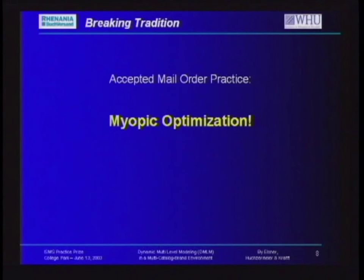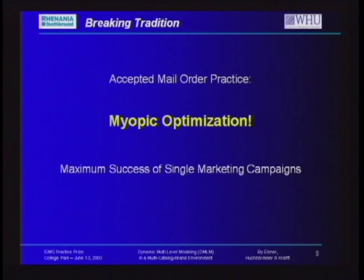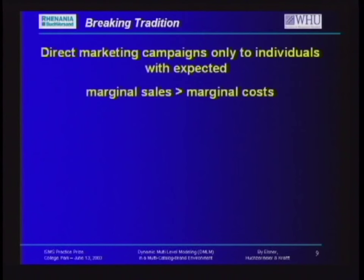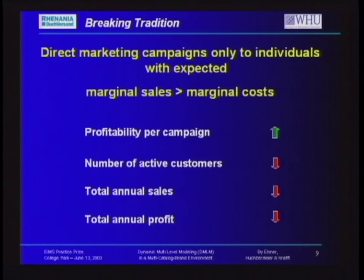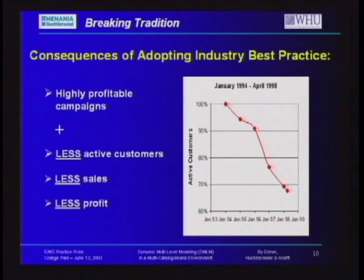You might ask what's wrong with that. We think a lot is wrong. In direct marketing, this led to a myopic optimization that tries to reach the maximum success out of single marketing campaigns. There are different ways to measure success, but one factor they all have in common is that marginal sales must exceed or equal marginal costs. This is taught everywhere worldwide, and if you do that, you have high mailing profitability. But you lose active customers because you focus only on the best of those, and therefore you lose annual sales and under certain circumstances, even profit.